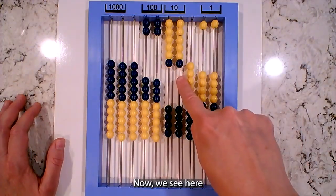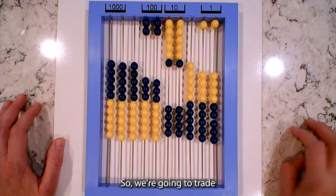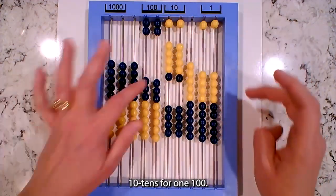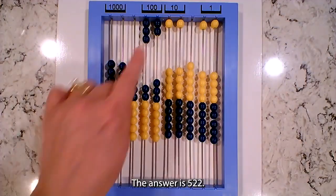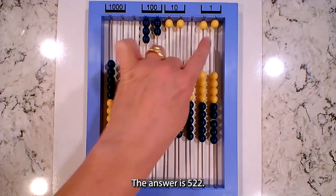Now we see here that we have a trade, right? So we're going to trade 10 tens for one 100, and there you go. The answer is five hundred twenty two.